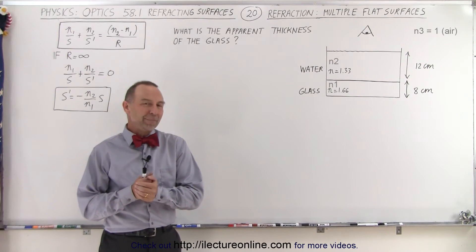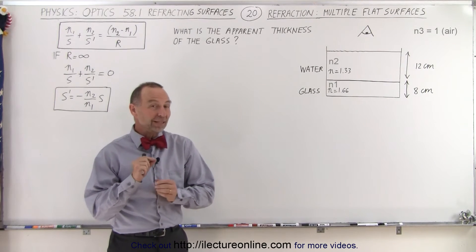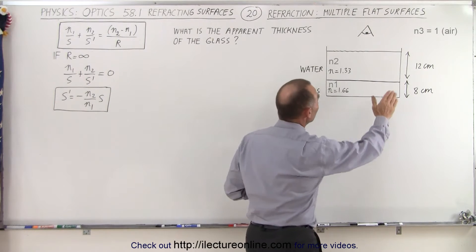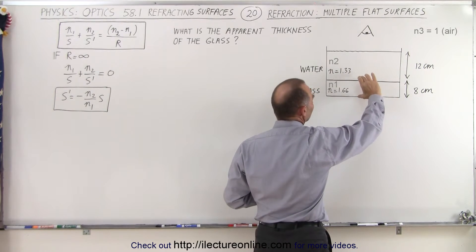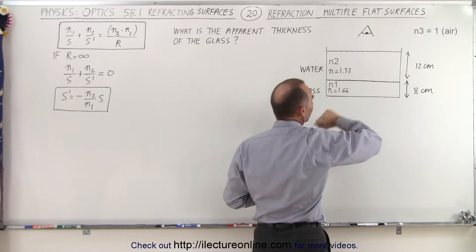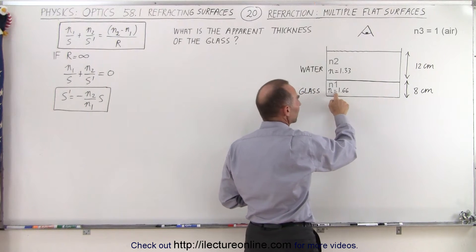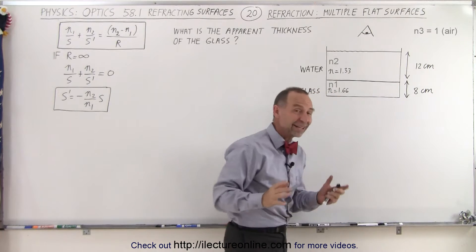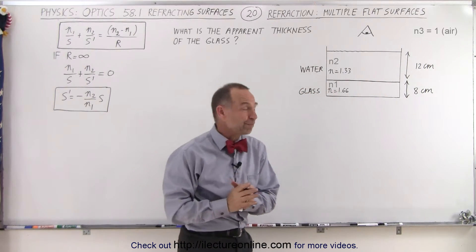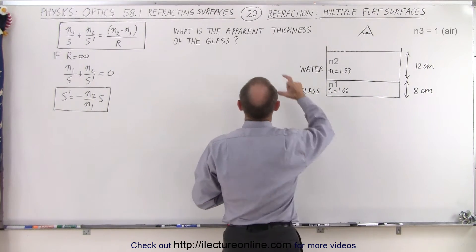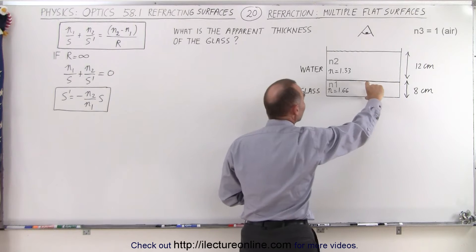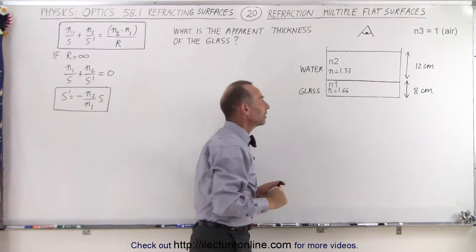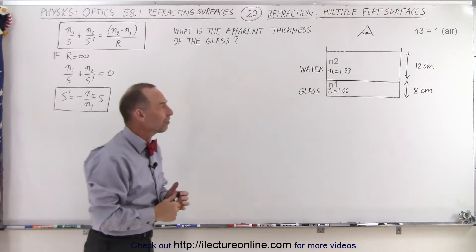Welcome to our lecture online, and now for something a little bit more challenging. Here we have a fish tank, so to speak, with water at the top. The bottom is very thick — it's made out of glass with an index of refraction of 1.66, and it's 8 centimeters thick. The question is: what is the apparent thickness of this glass as seen by a person above the aquarium?